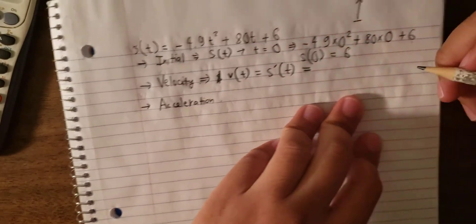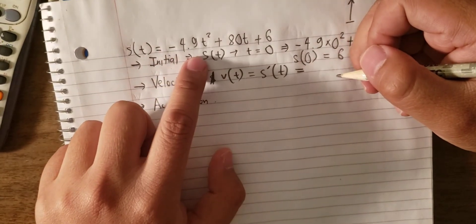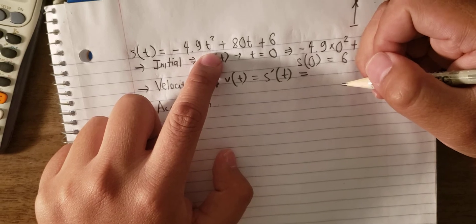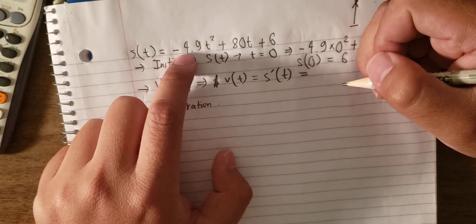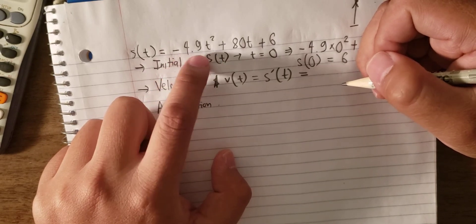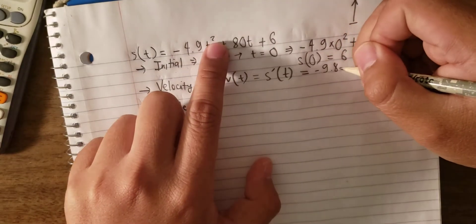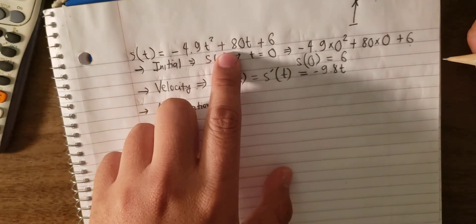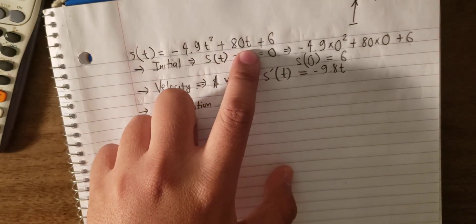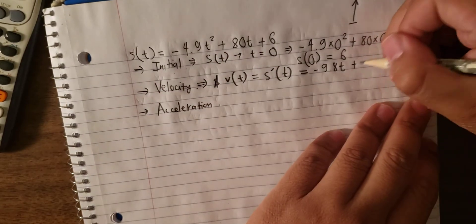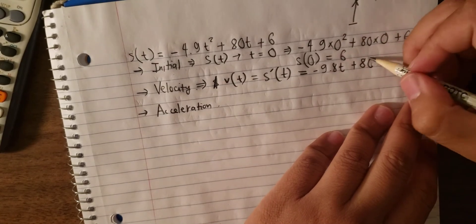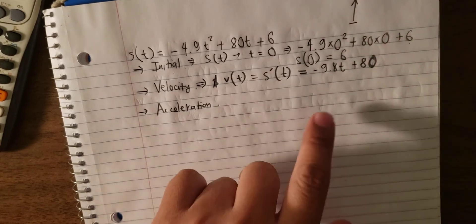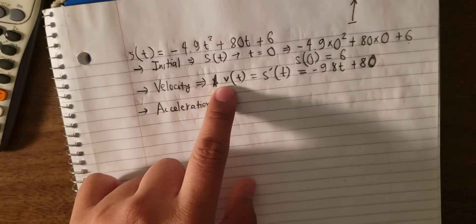And we get minus 4.9, and we have the first derivative of t power 2, which is 2t, so minus 9.8t. And we have the first derivative of 80t is 80. And this is the function of the velocity.